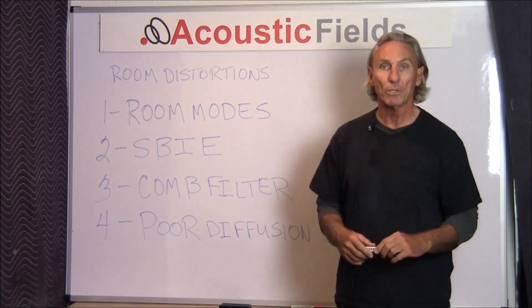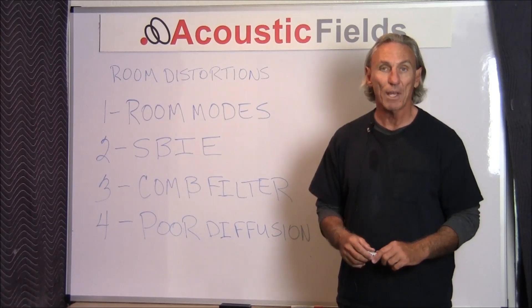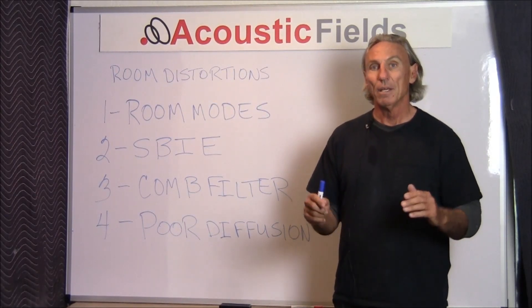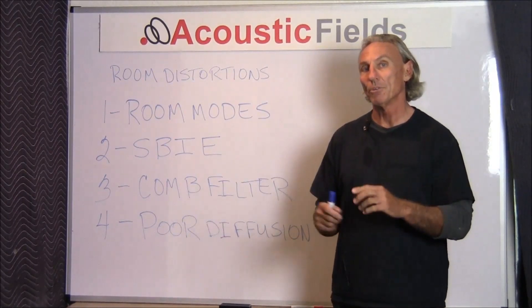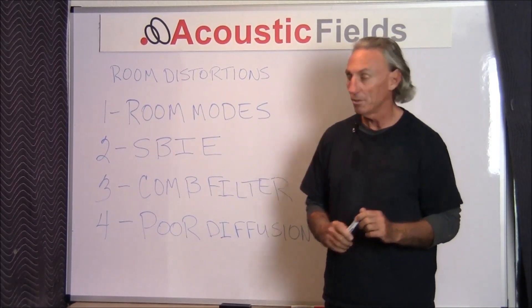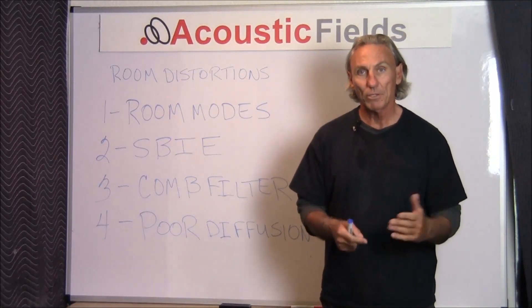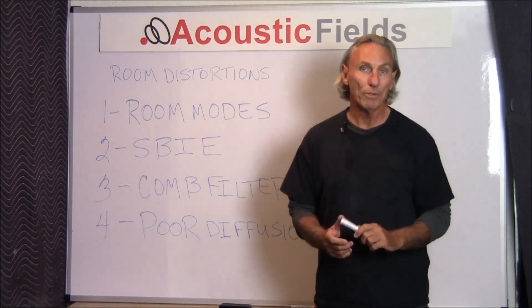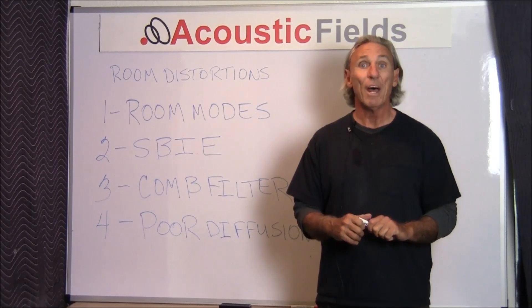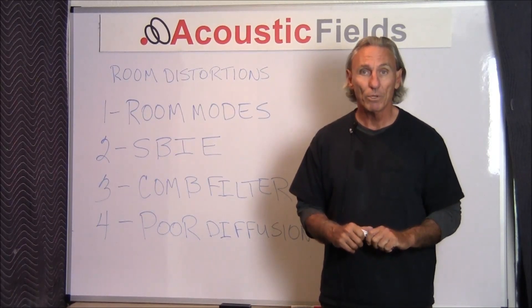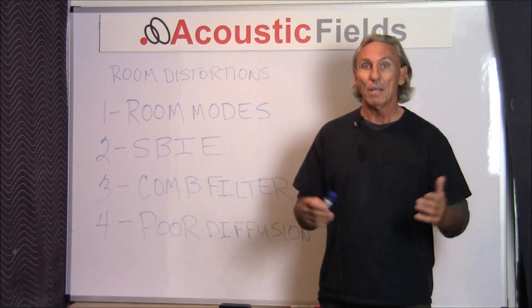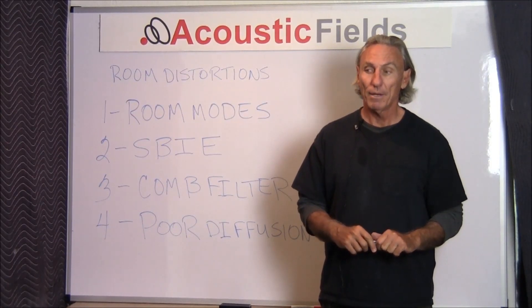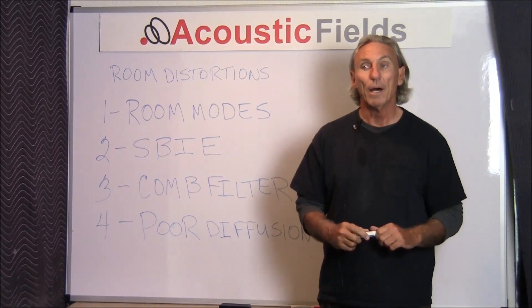The first one is room modes — these are the high and low pressure areas as a result of long wavelengths, low frequency energy not fitting into our smaller rooms. Second is SBIE, speaker boundary interference effect, the distortion caused between the speakers and the surfaces of our room. Third is comb filter, a series of reflections between two surfaces that looks like the teeth of a comb on a graph. And finally, poor diffusion — probably the most misunderstood concept in room acoustics, yet very important. Today we'll elaborate on each of these four.